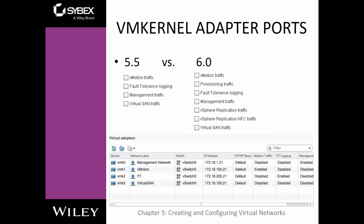Let's look at the differences in VM kernel adapters between vSphere 5.5 and 6. In 5.5, you had vMotion, fault tolerance, virtual SAN traffic, and management traffic. In vSphere 6, we now also have provisioning traffic, replication traffic, and replication NFC traffic — several new features added in version 6.